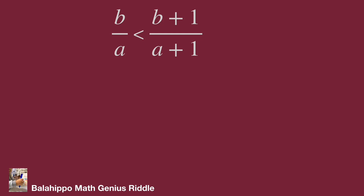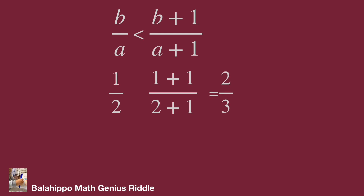Take an example. When b equals one and a equals two, so b over a equals one over two. Then b plus one equals one plus one equals two, and a plus one equals two plus one equals three. So b plus one over a plus one equals two over three. Comparing these two fractions, two over three and one over two, we find two over three is larger than one over two.